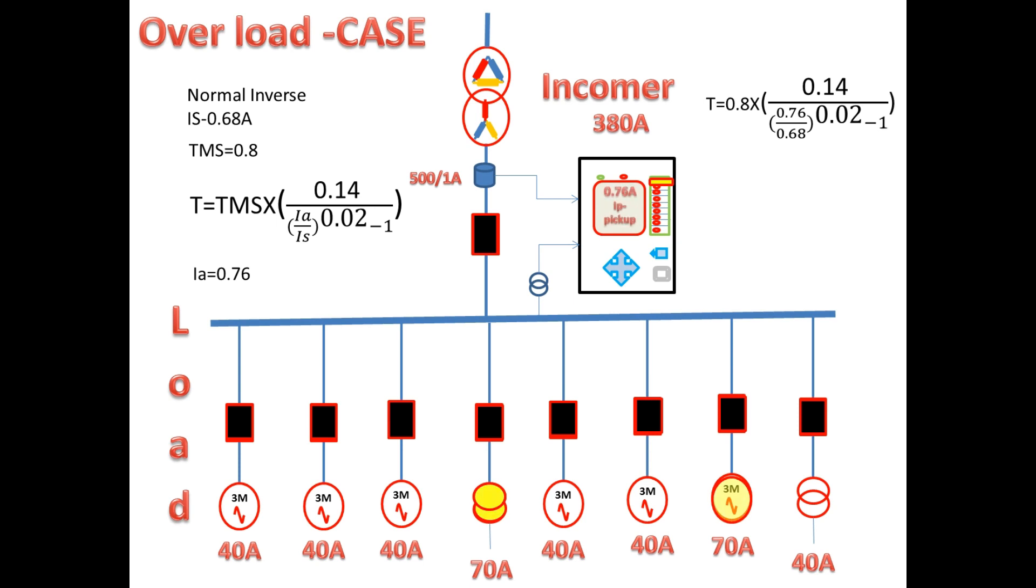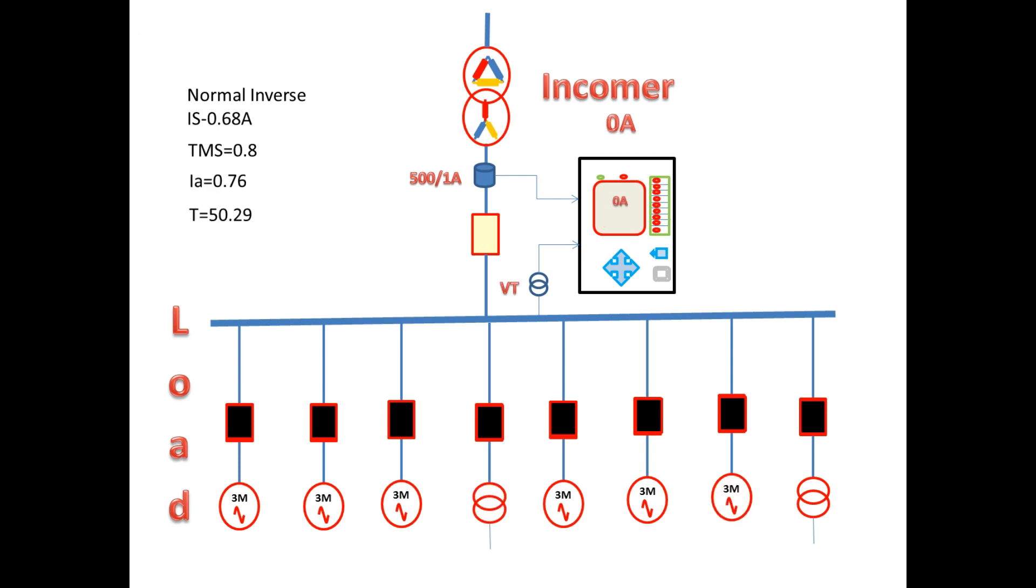So the incomer will wait for 50.29 seconds whether the load is coming back to normal or outgoing CB trips. If still load current is not reduced or these two feeders do not get tripped, then to protect these equipment the incomer has to trip.